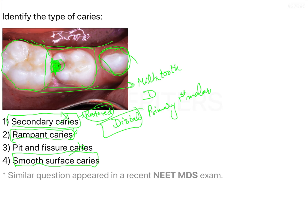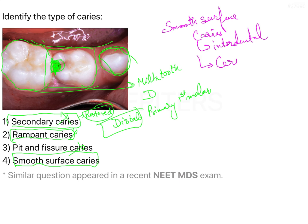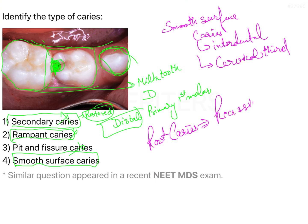Smooth surface caries are generally seen in the interdental area, that is the proximal area, or they can be seen in the cervical third of the teeth where more plaque accumulates and is hard to clear. There are also root caries or cemental caries, generally seen in older patients with gingival recession — due to recession there is root surface exposure, increasing the chances of developing caries on the root surface.